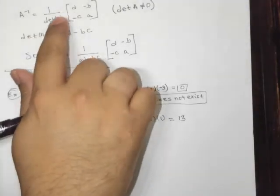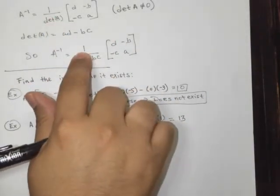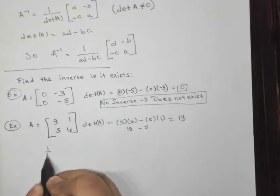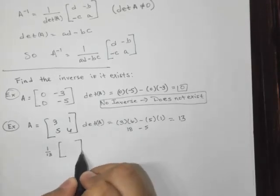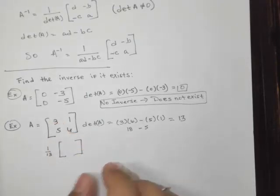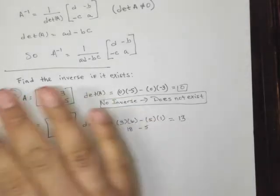Now what we're going to do is follow this rule here. So we're going to say 1 out of 13 on the outside. And then on the inside of the matrix, first we're going to swap these two. So we swap 6 and 3. There we go, swapped.